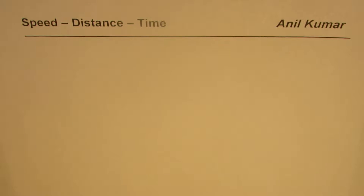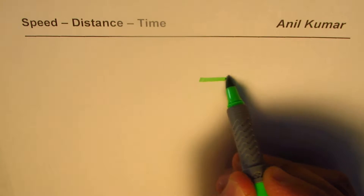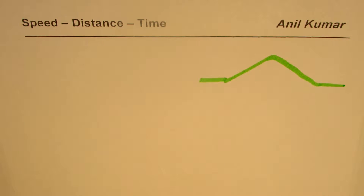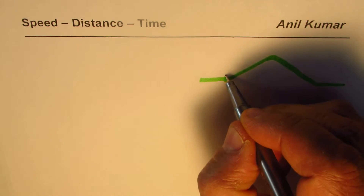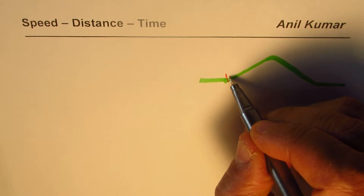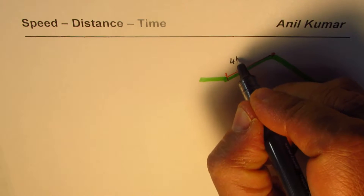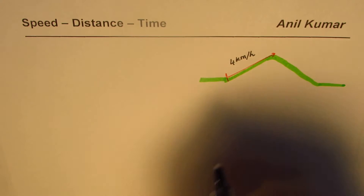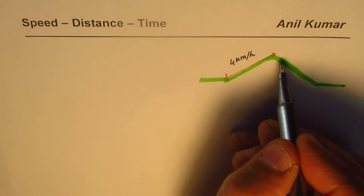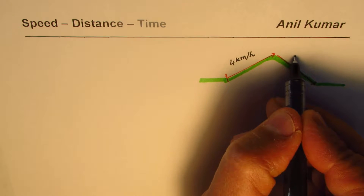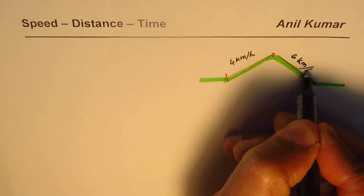I'm Anil Kumar sharing with you a very interesting problem on speed, distance and time. Let us consider a person who is walking and comes across a hill. He decides to go over the hill and then down to the other side. While walking up the hill, the average speed is four kilometers per hour, and while coming down the speed is slightly higher — six kilometers per hour.